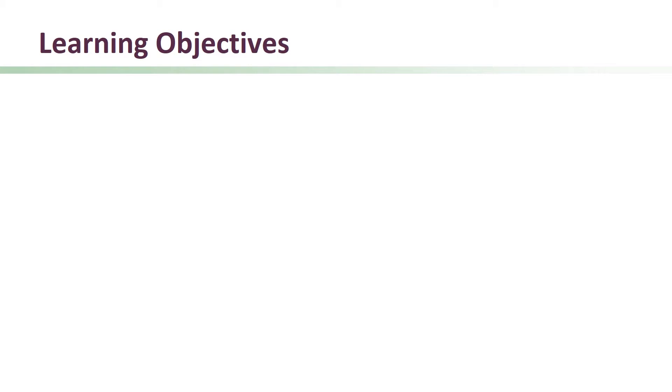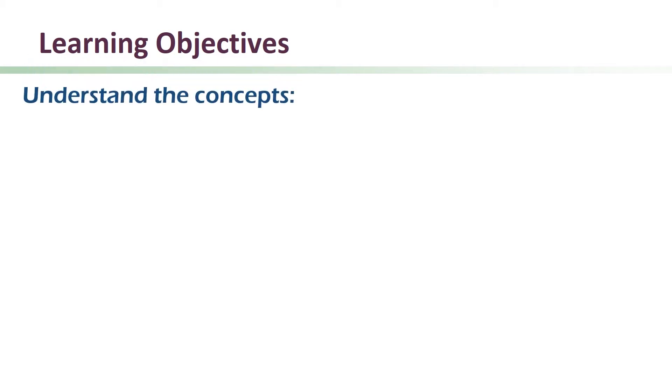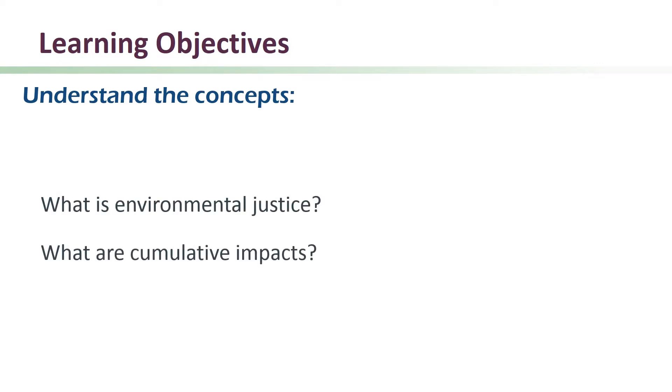In this second module, we'll cover two concepts that are important in understanding the CalEnviroScreen tool. The first is environmental justice and the second is cumulative impacts.